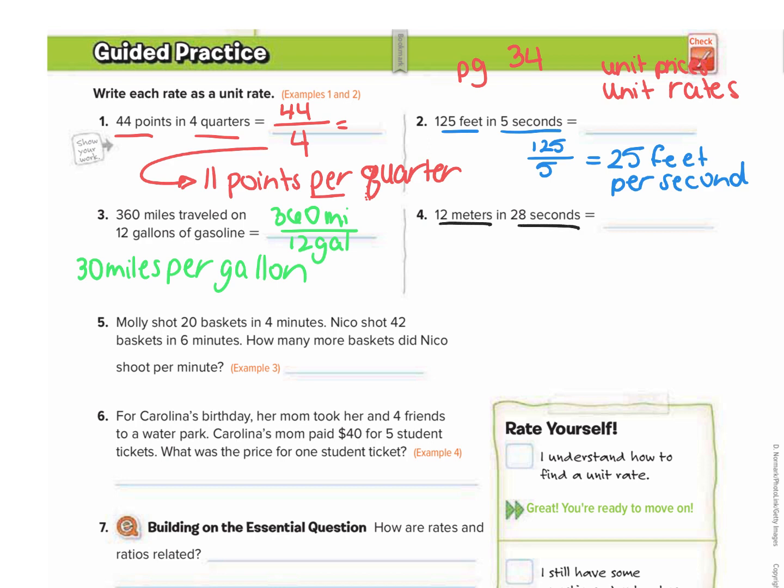Number four, 12 meters in 28 seconds. So 12 meters in 28 seconds. So this one is a fraction. It's not an improper fraction like the rest of them have been. It's a fraction that's less than one. So instead of dividing these because we're just going to get a long decimal, we're actually just going to simplify it.